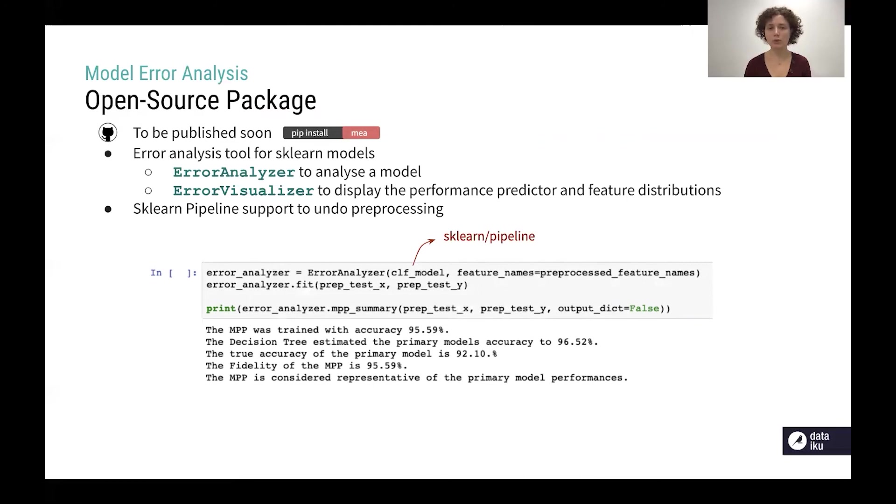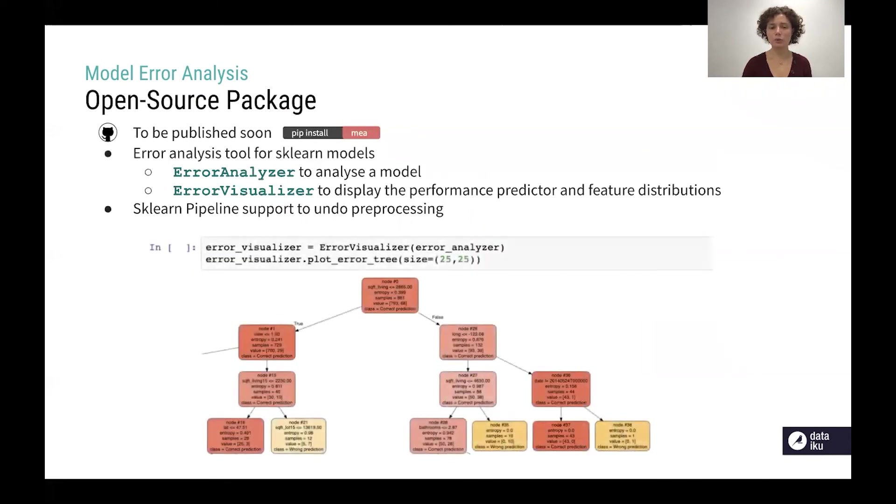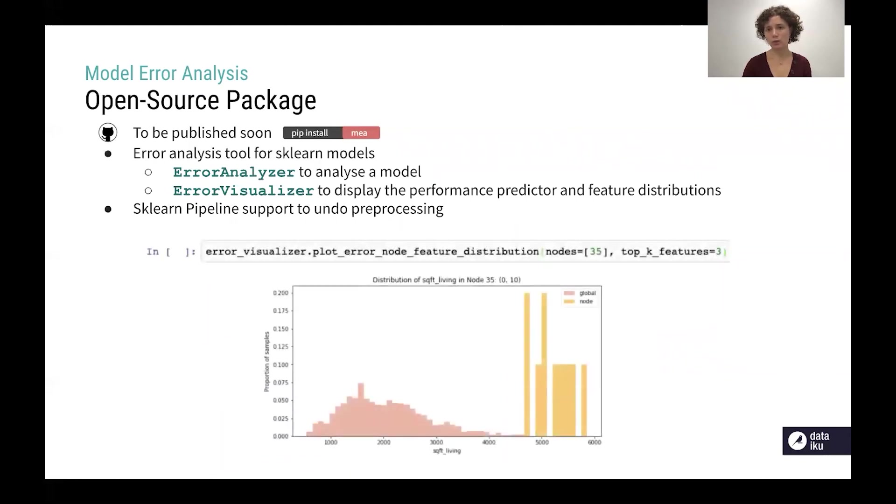It supports pipelines so in a few lines of code you can instantiate an error analyzer on both an sklearn or a pipeline model and fit it to train a model performance predictor. Afterward you can use the visualizer to visualize both the error tree and feature distributions. This package automatically highlights the failure nodes based on how important they are and also the features that are more correlated with the error are automatically highlighted.